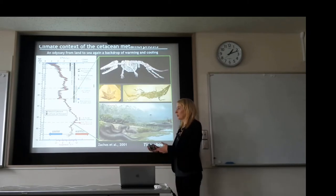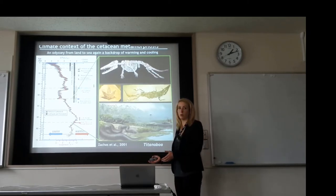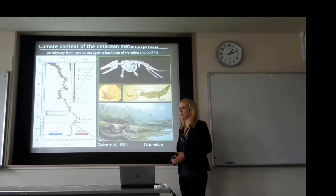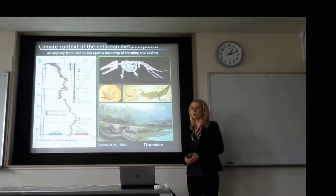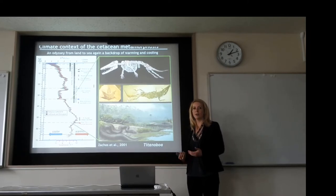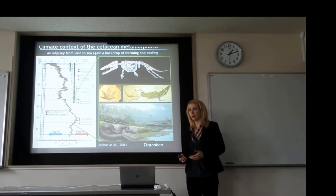We know it was really warm not just from the chemical composition of carbonates from seawater, but also from the fossils themselves. You have things like crocodiles living on Ellesmere Island — so in the Arctic Circle you have crocodiles, and you also have palm trees present there. So we know that the Earth is warm — another one of these equable climate states where it was warm all across the globe.